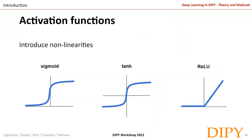Activation functions introduce non-linearities in the network, and learning a non-linear function allows extracting more interesting features from the input data. The sigmoid squashes numbers to the zero-to-one range; historically popular since it resembles the saturating firing rate of a neuron, but saturating neurons kill the gradients and sigmoid outputs are not zero-centered.